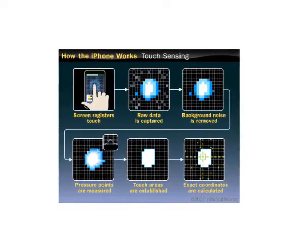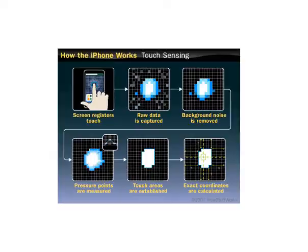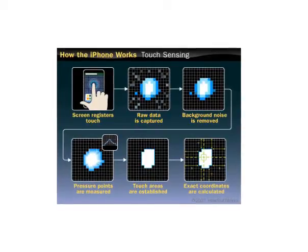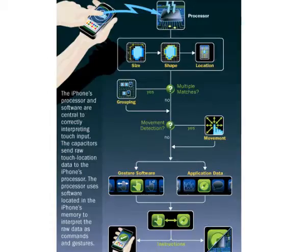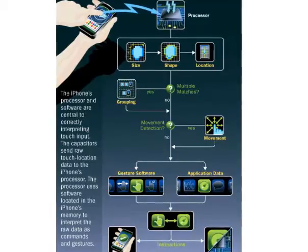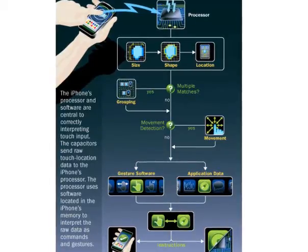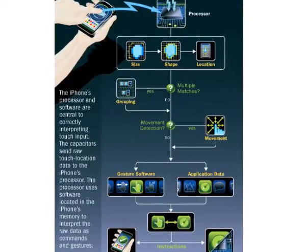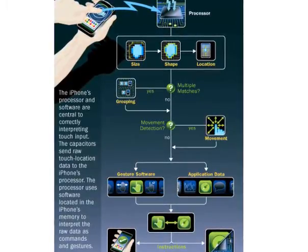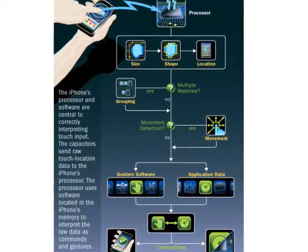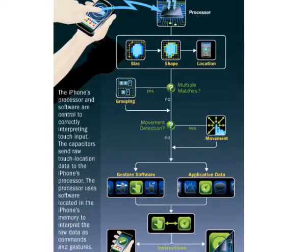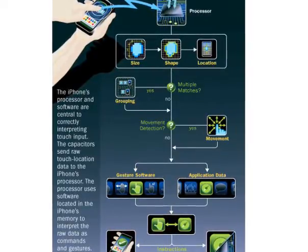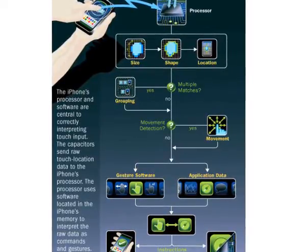The iPhone uses a layer of capacitive material arranged according to a coordinate system. Its circuit can sense changes at points along the grid. In other words, every point on the grid generates its own signal when touched and relays that signal to the iPhone processor.